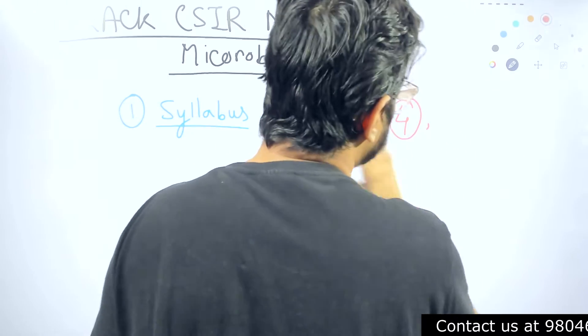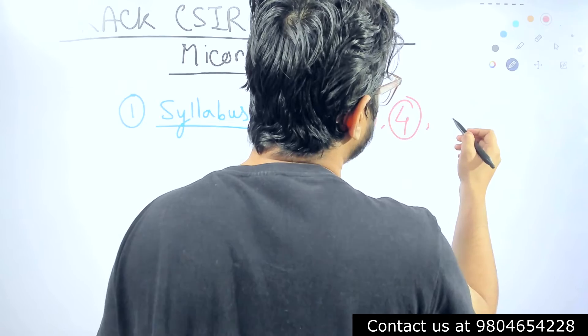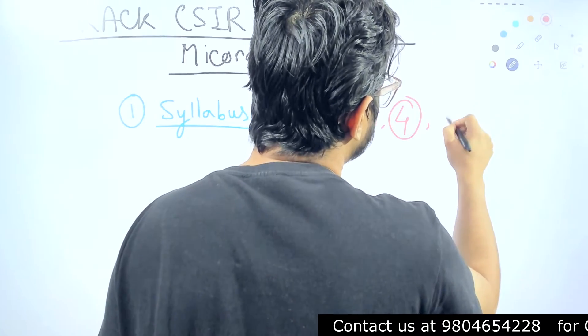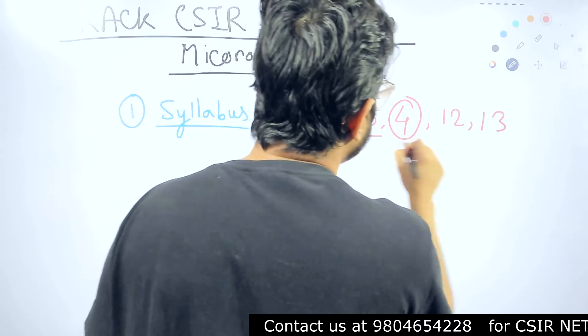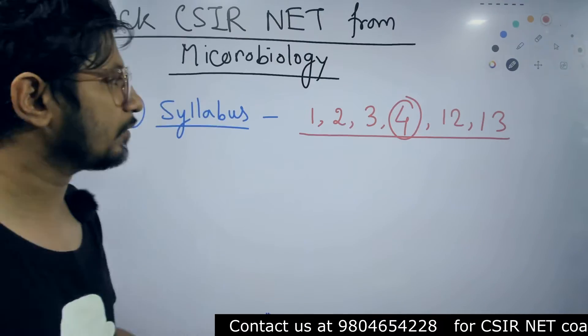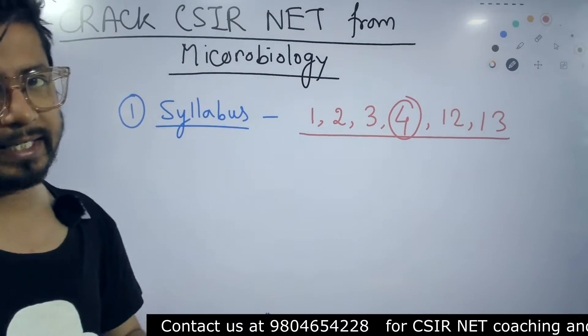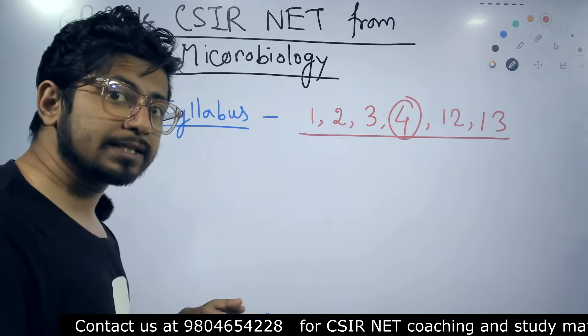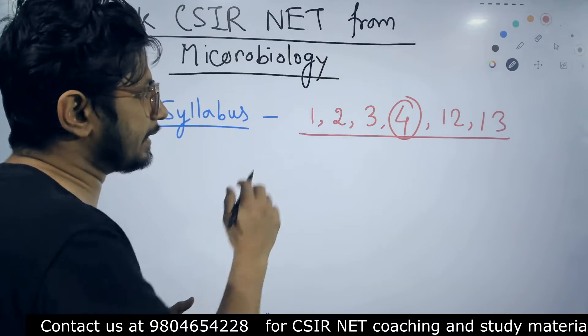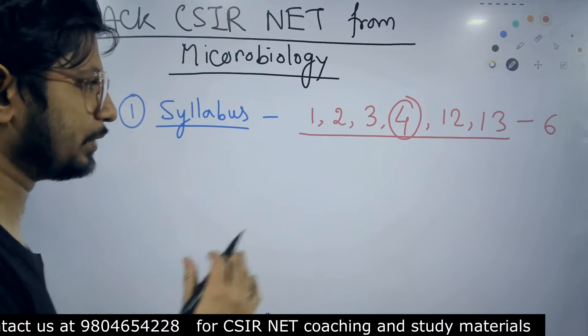These are the common units. Then portions from Unit 12 and portions from Unit 13. These are the most common units that you'll find from your microbiology syllabus as well as the CSIR NET Life Science syllabus. So these are all modern biology topics, not classical biology. There are six such units out there which are very common.